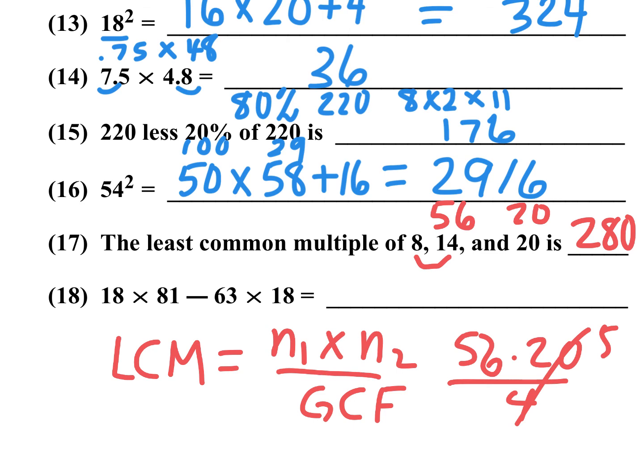Number 18: Factor out 18 from the expression, leaving 61 minus 63, times 18. Wait — 61 minus 63 is negative 2, so it's negative 2 times 18... actually factoring gives 18 times 18, which we already computed as 324. The correct answer is 324.